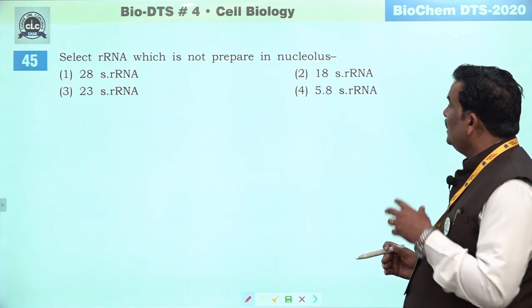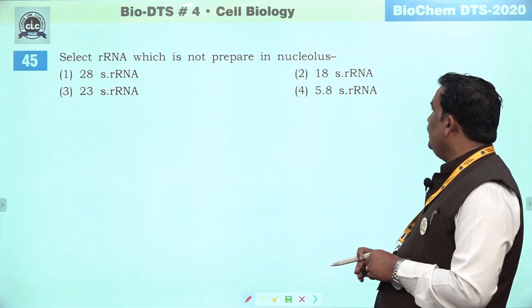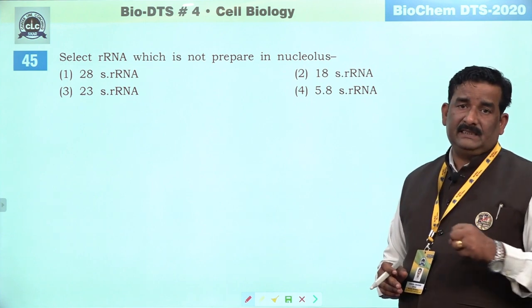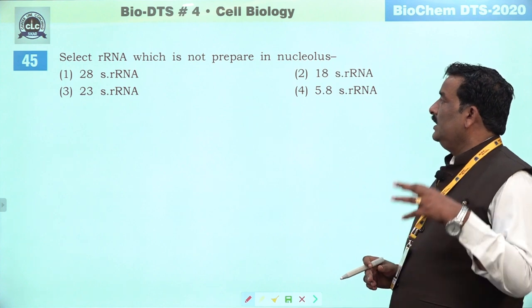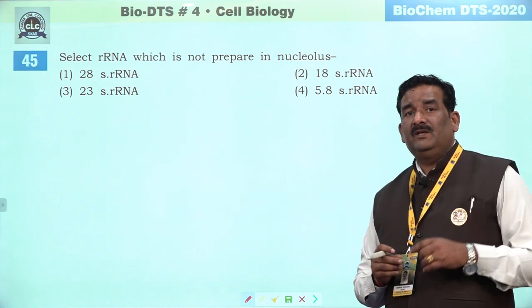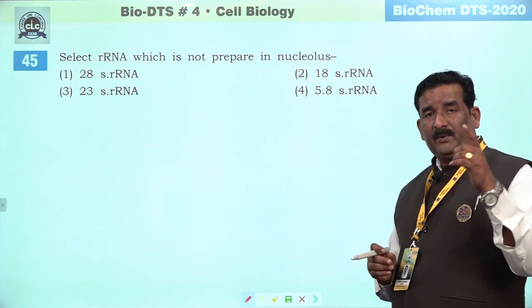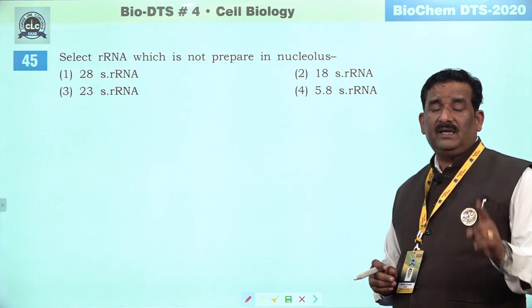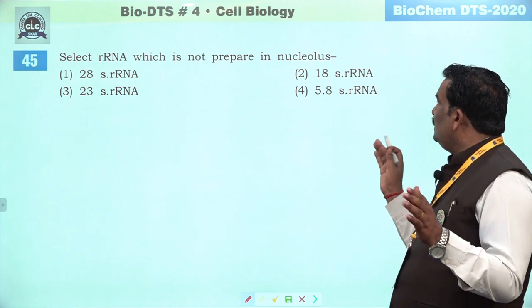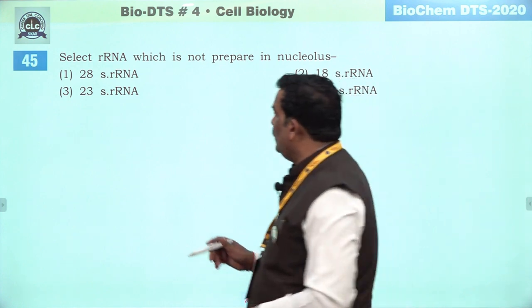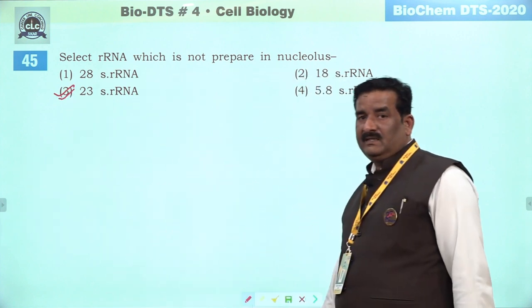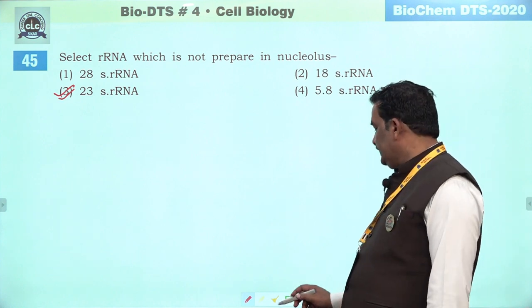Next question: select rRNA which is not prepared in nucleus. Kyunki nucleus mein rRNA wahi bante hain jinका connection eukaryotic cell se hota hai. 23S rRNA — yeh 70S ka ribosome hai, jo prokaryote se bhi connected hai. Prokaryote mein nucleus nahi hota, isliye wahan cytoplasm mein hi iska formation hota hai. Nucleus mein inका formation nahi hoga — woh hai 23S rRNA, they are prepared inside the cytoplasm, not prepared inside the nucleolus. Third is right answer.